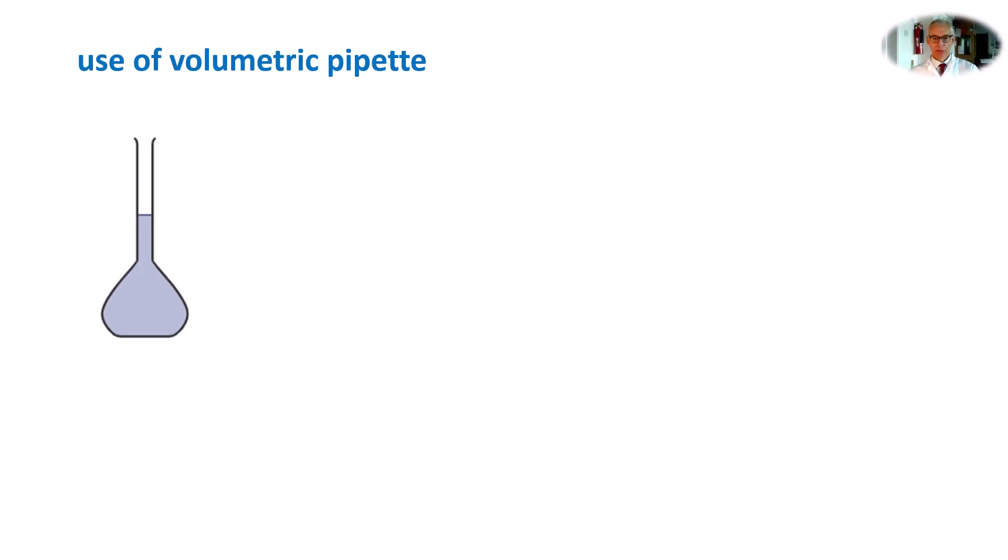Having prepared your solution in a volumetric flask, we now need to extract 25 centimeters cubed, the usual volume, you may need a different volume, using a volumetric pipette. Here is our volumetric pipette with pipette filler. I have a traditional image there, you may have a more modern one to use in your laboratory.